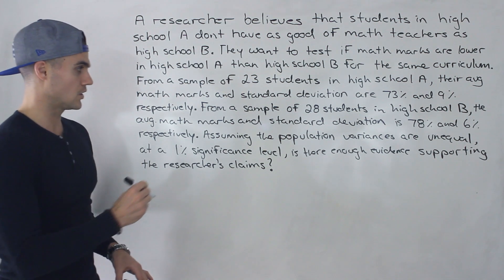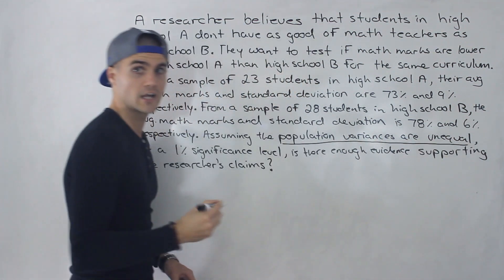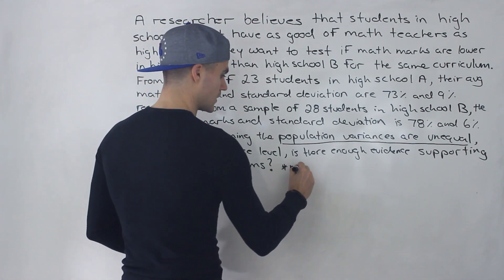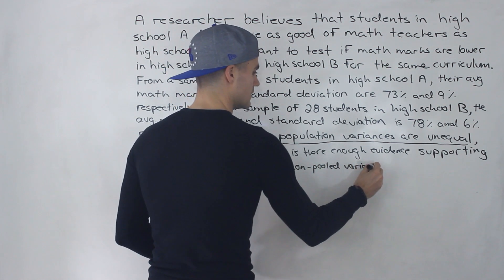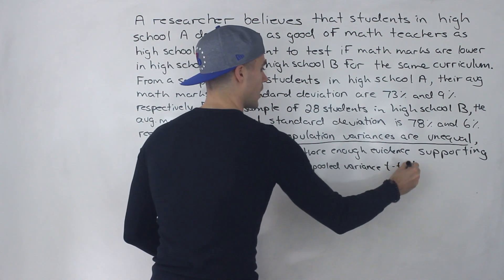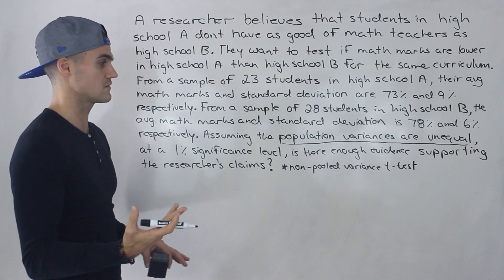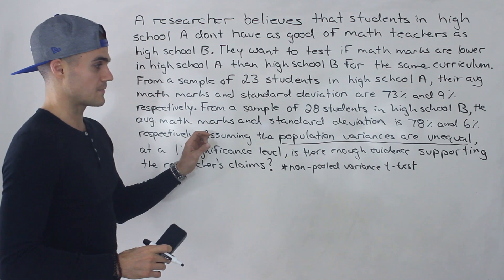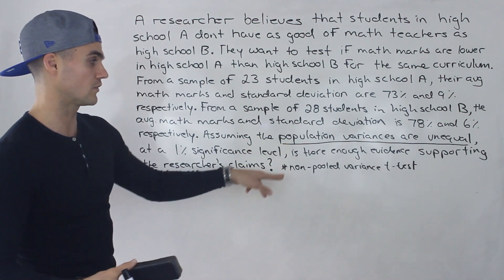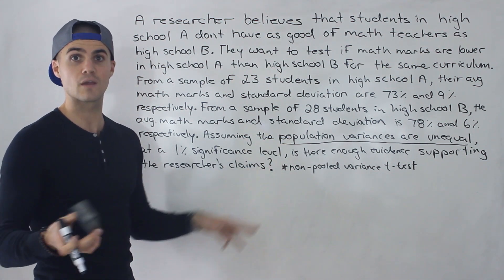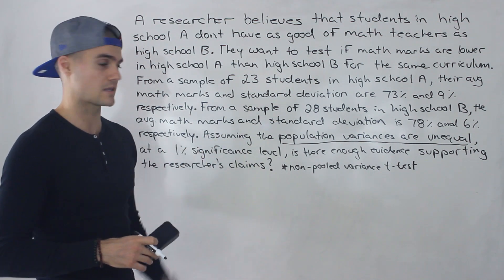First thing to note is that we're told population variances are unequal, so we know we're going to be doing a non-pooled variance t-test. The population standard deviations are not given — we're given the sample standard deviations. So we're doing a t-test, and since the population variances are unequal, it's a non-pooled variance t-test. If they were assumed to be equal, we'd be doing a pooled variance t-test like in the previous video.